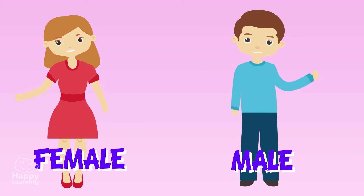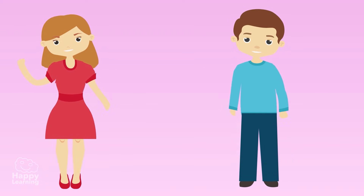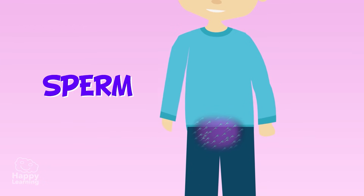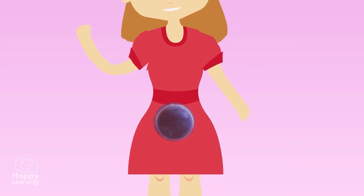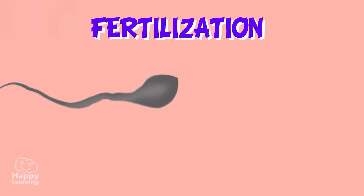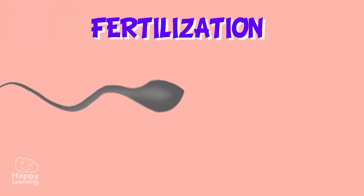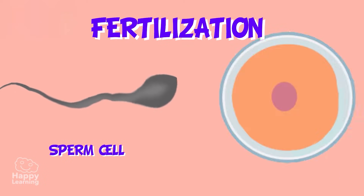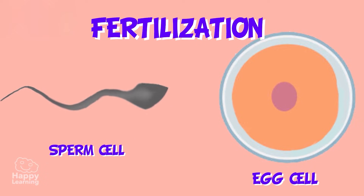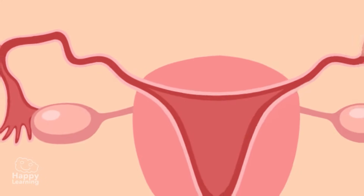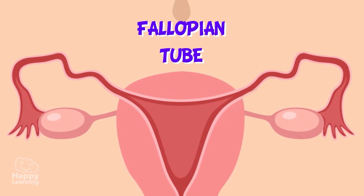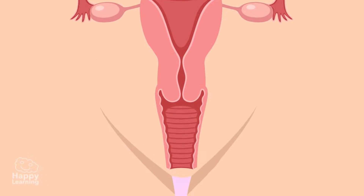Both females and males need to intervene. The male reproduction system produces sperm and the female reproduction system produces egg cells. Fertilization is when a man's sperm cell and a woman's egg cell, released from her ovaries, unite — and this happens inside the woman's body, normally in the fallopian tube.